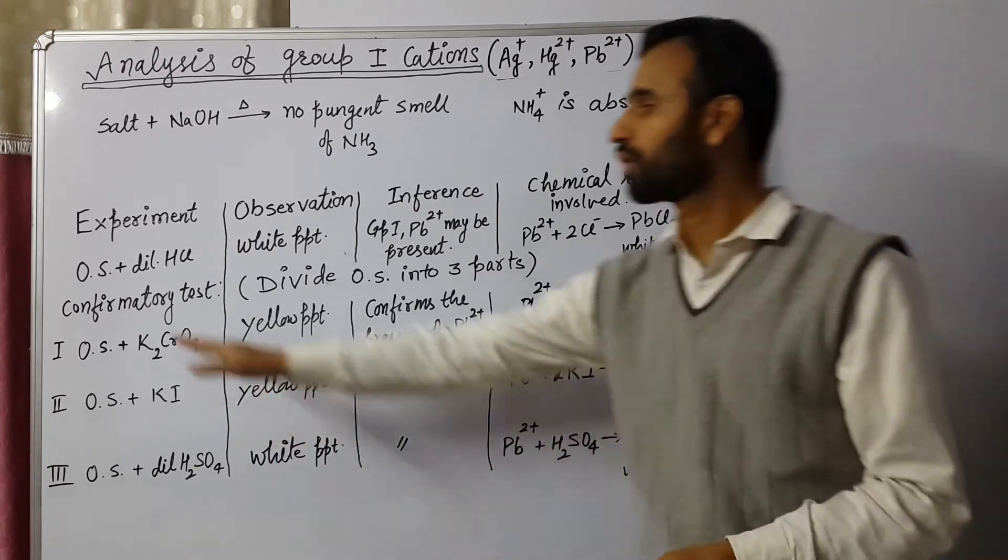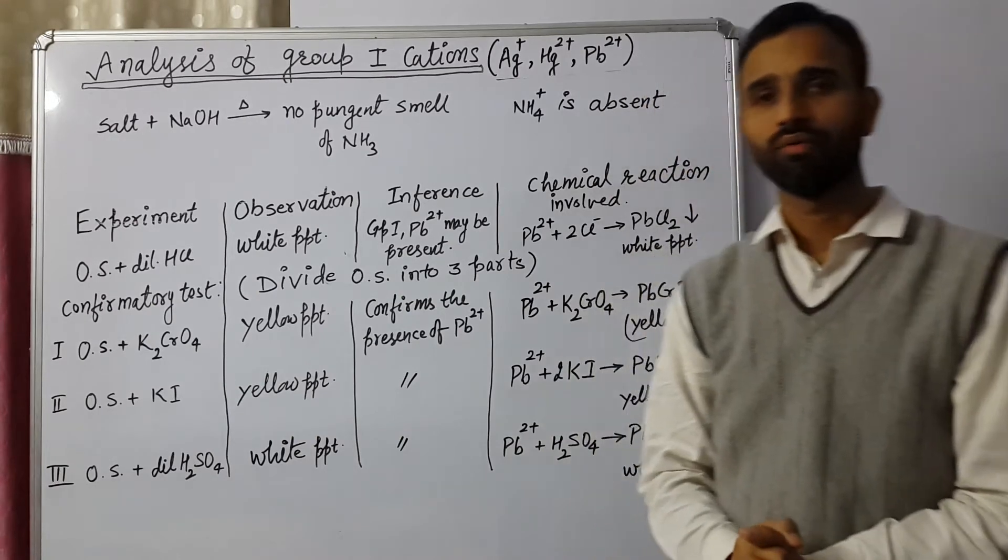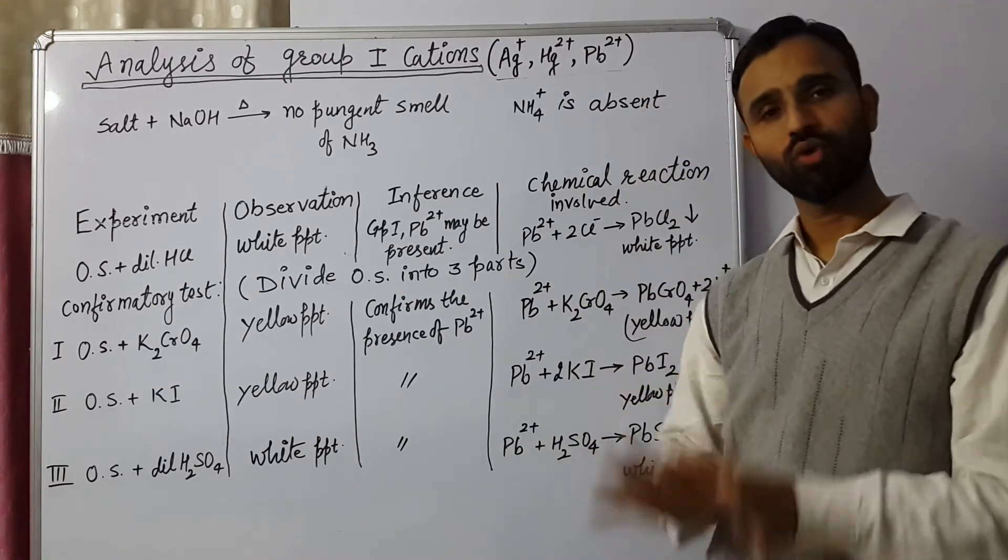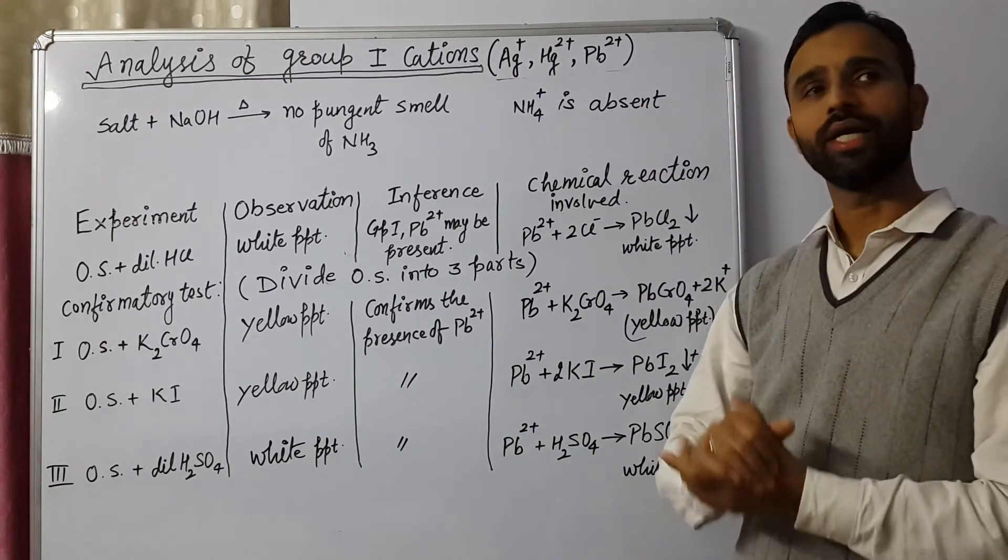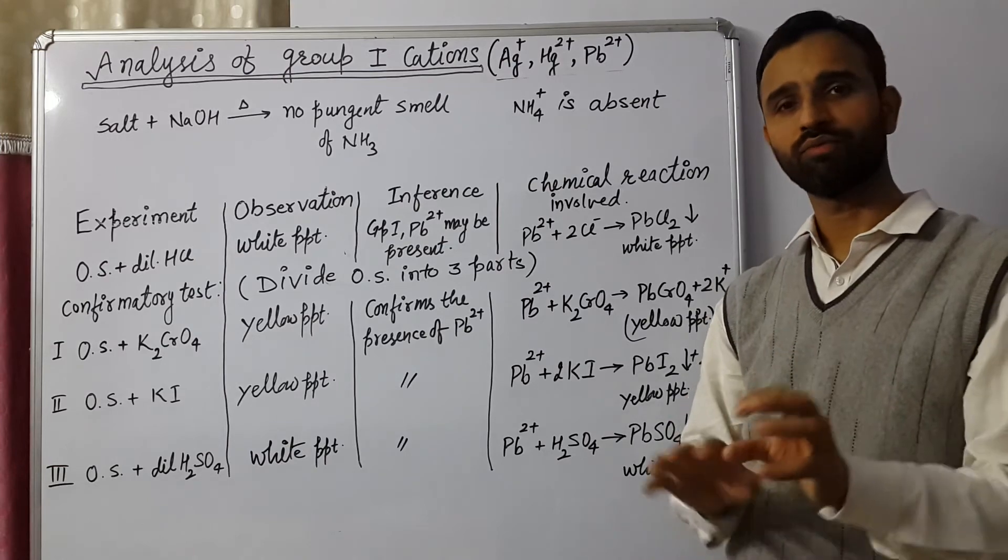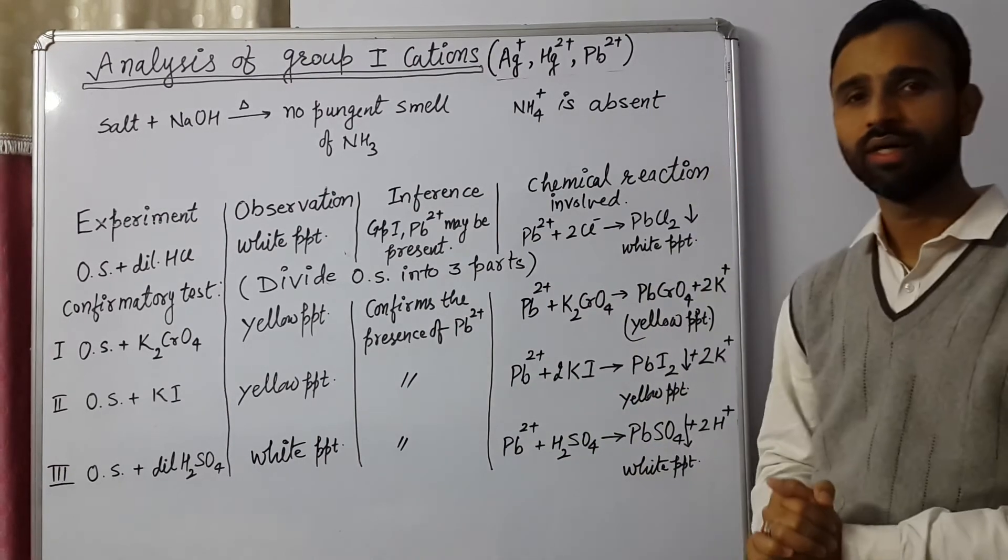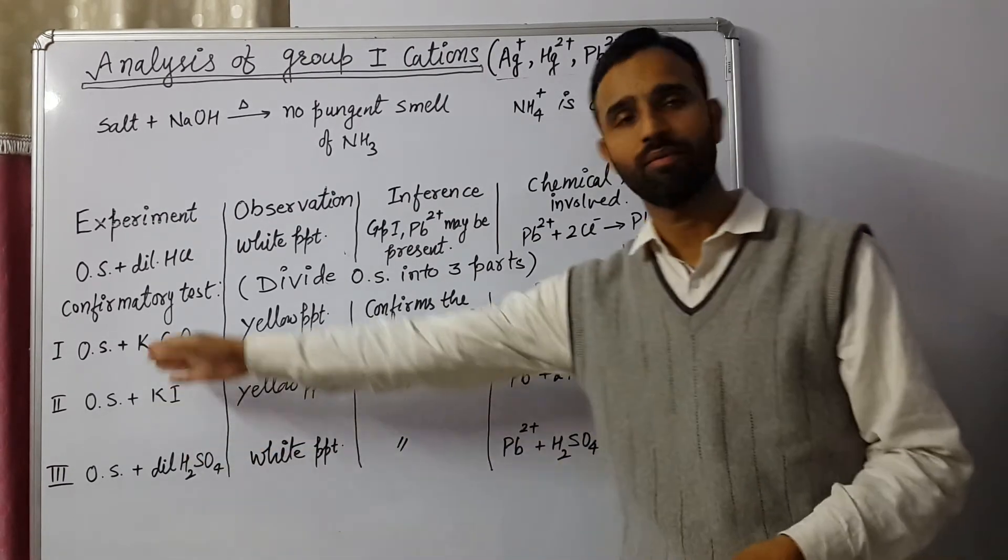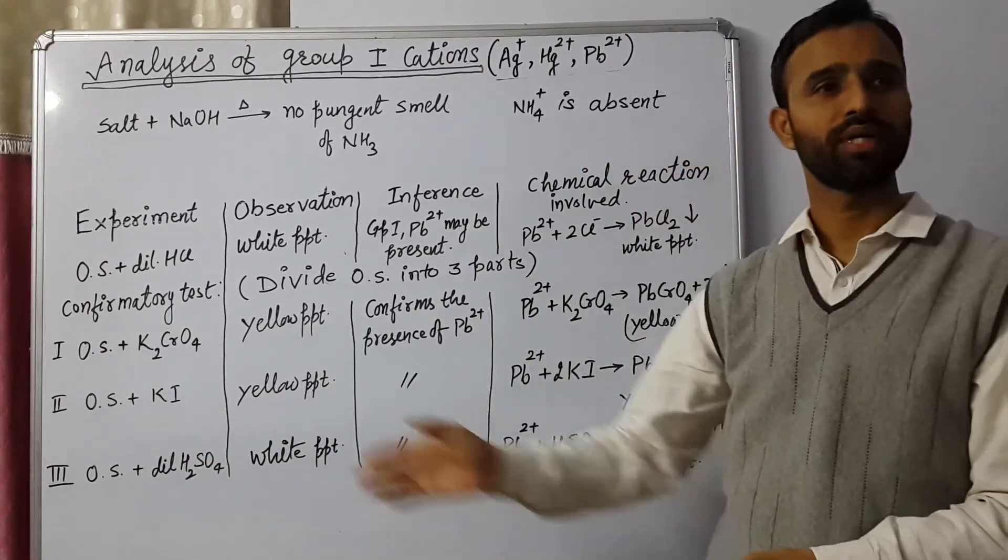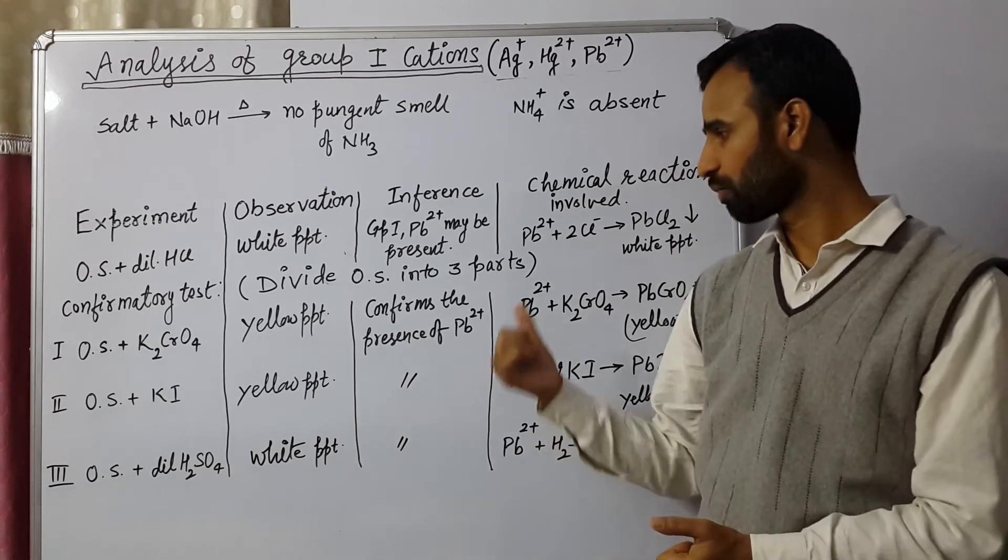Then we go for confirmatory tests. For that, again we prepare OS. And that OS, we divide into three parts in three test tubes. In first test tube, we add potassium chromate, yellow PPT appears. That is of lead chromate. You can see the reaction.